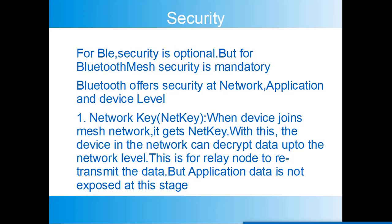Bluetooth mesh offers security at the network, application, and device levels. For network-level security, the network key — also called net key — is used. When a device joins the mesh network, it gets the net key, which allows devices in the network to decrypt data up to the network level. This is used by the relay node to retransmit data, but the application data is not exposed at this level — it cannot be decrypted with the network key alone.